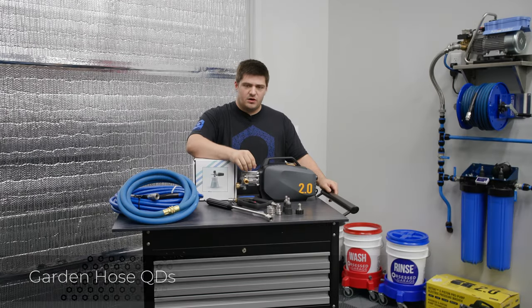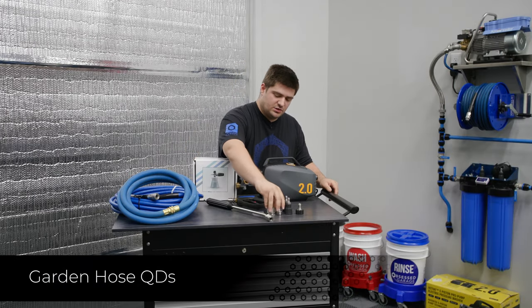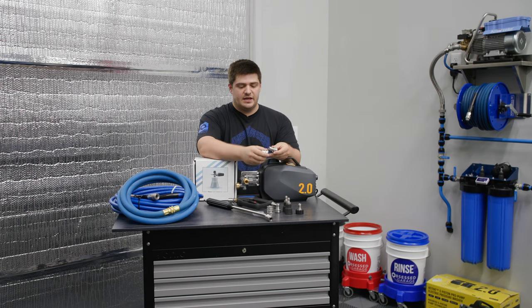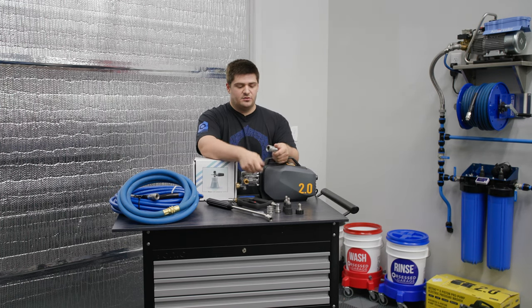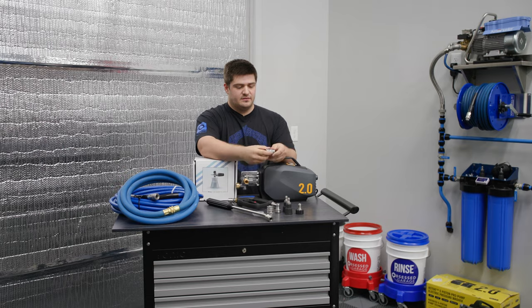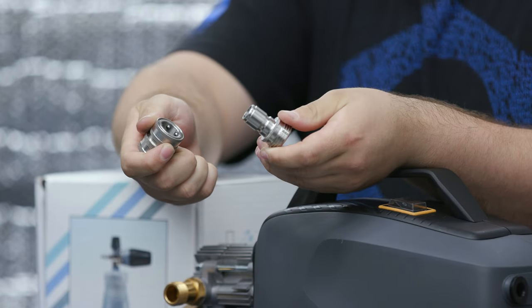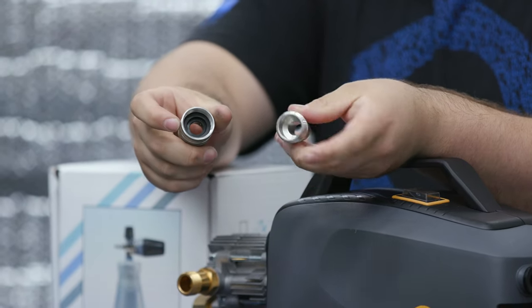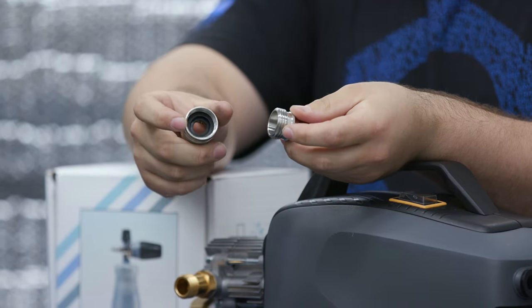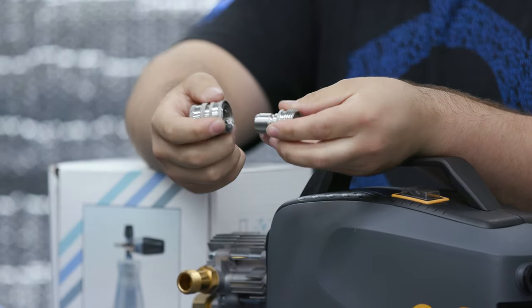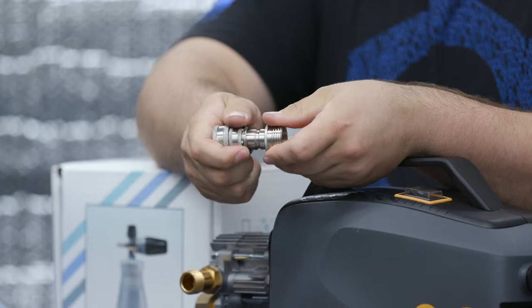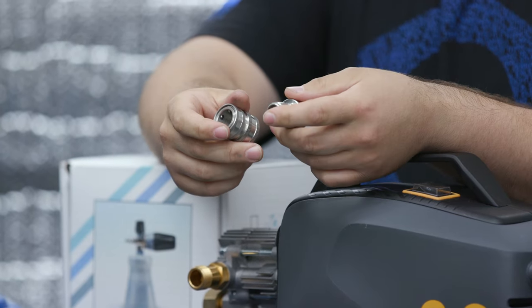So we'll start with the garden hose quick disconnect. You're going to get two of them. They're going to come together in the box and I'll show you that motion real quick. They come like this and they come apart into two pieces. You're going to have a female side and a male side, meaning that the threads are internal and external. So what you're going to want to do, pull them apart and we can get started with assembly.